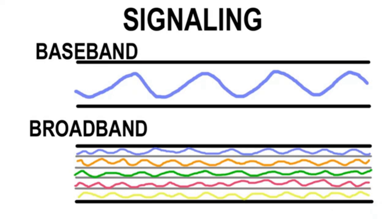An example of a baseband system is the old school landline telephone system. Telephone systems are now starting to use broadband signaling, allowing you to use DSL and your telephone at the same time. But in the old days, telephones used baseband signaling — you picked up the receiver and made a call, and while you were using the phone, someone on a different extension in the same house could not lift up the phone and make a call at the same time, because you could only have one signal on the wire at a time. Those are the two types of signaling categorizations used to define computer networks.